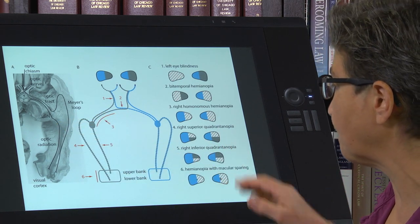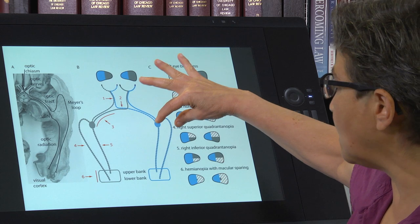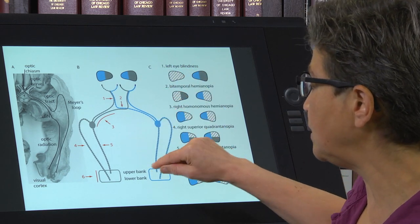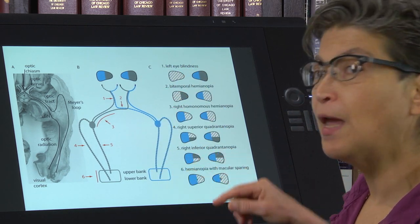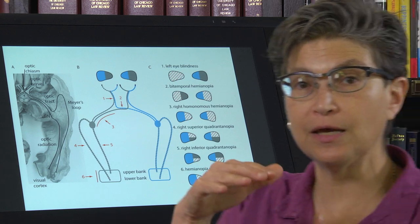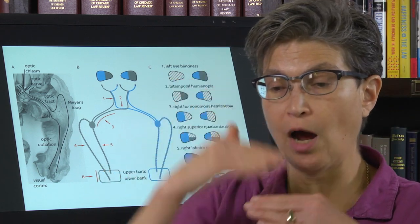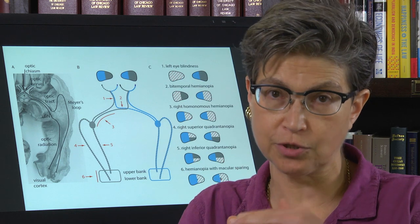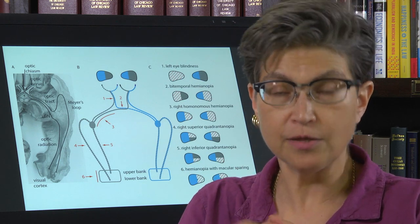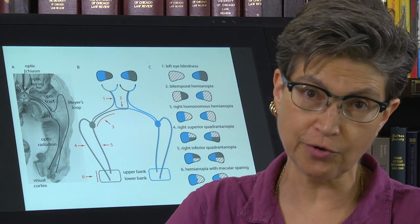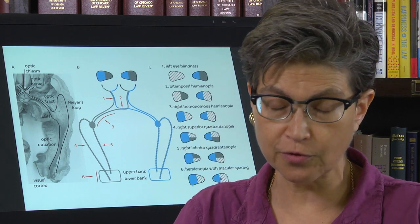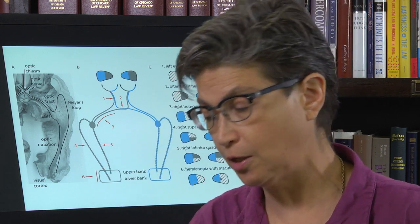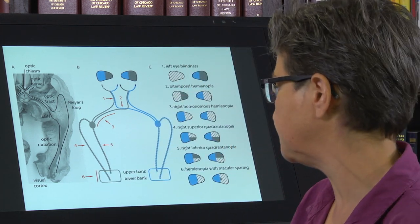These pathways come together as they approach the calcarine fissure, on either side of which there is an upper bank and a lower bank. The upper bank carries the inferior part of the visual field, and the lower bank carries the upper part of the visual field.